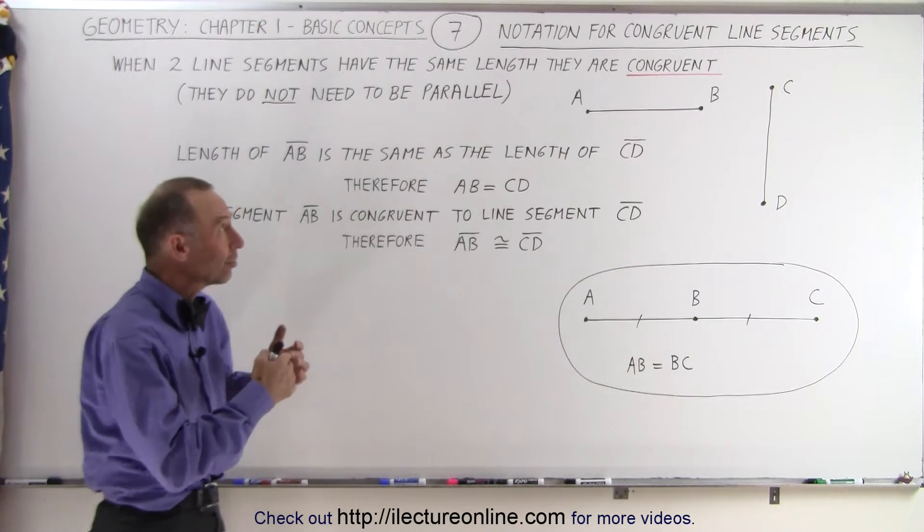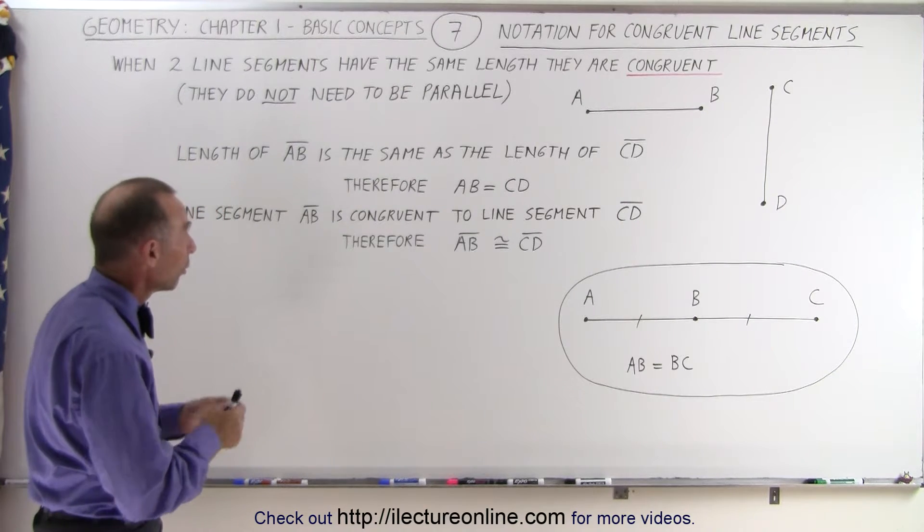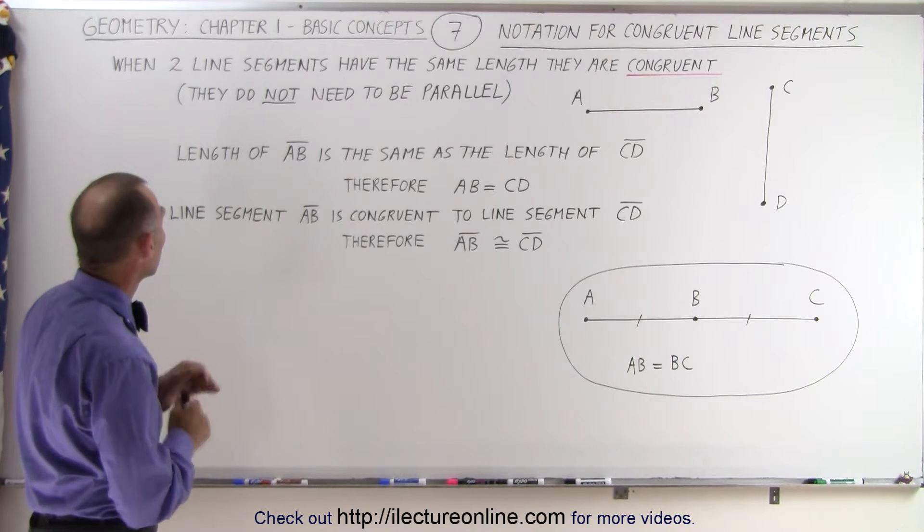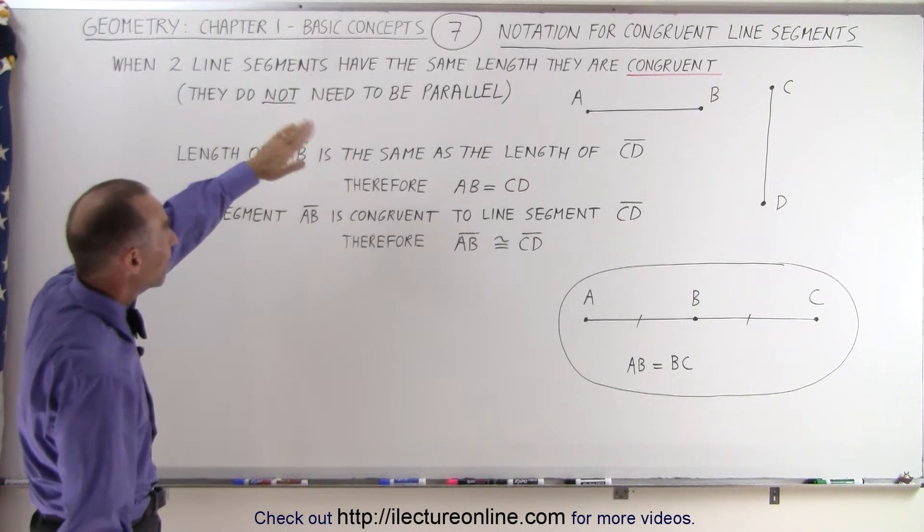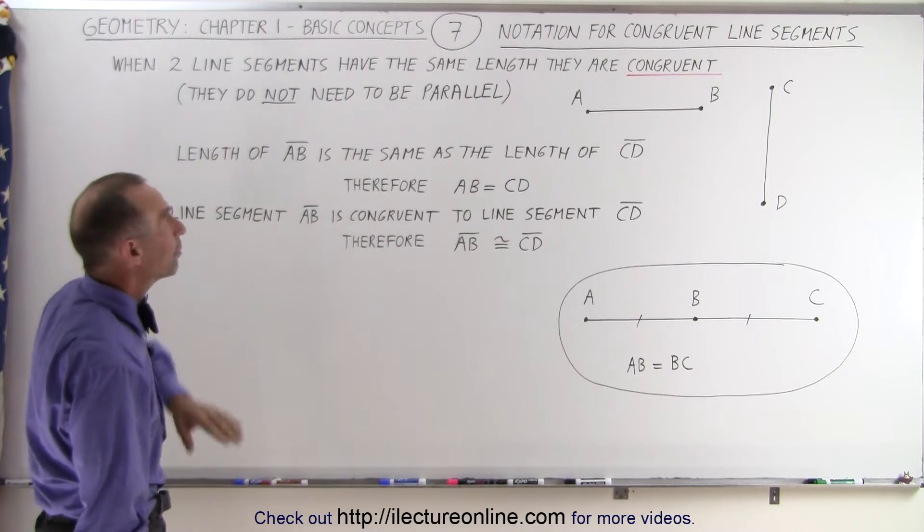So here again, talking about congruent lines and two lines being congruent—how do we notate that? What notation do we use? When two line segments have the same length, we call them congruent. They don't need to be parallel.